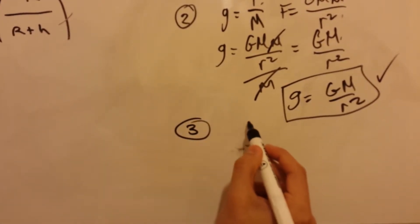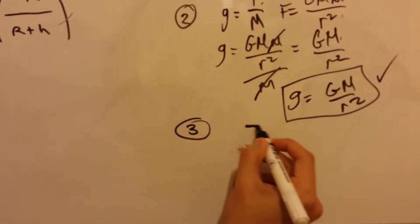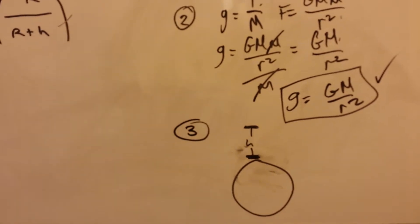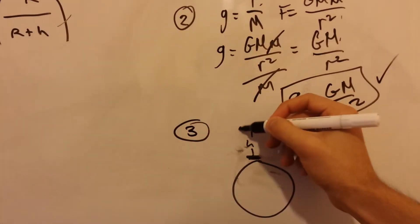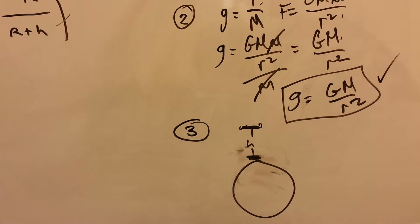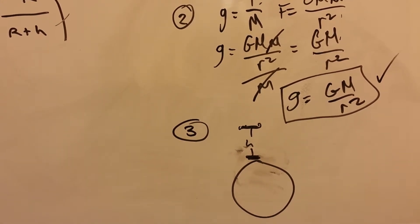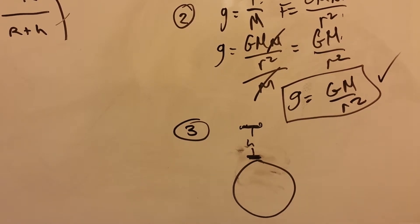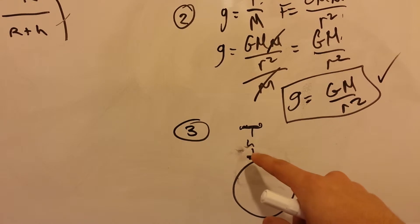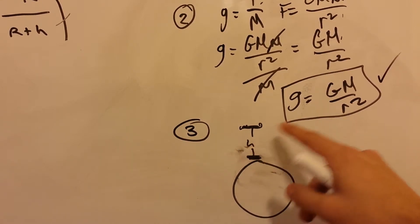And we want to find the gravitational field strength at a height above the surface. So, we want to find it here. We can't just... It'll be wrong. I think many people will do this. Many people will just think that the distance is h, so r equals h.